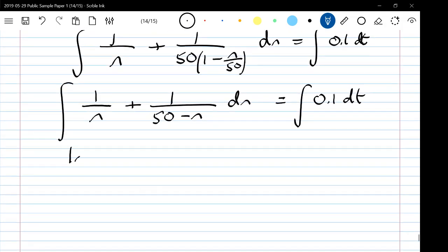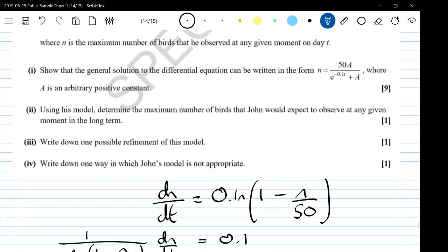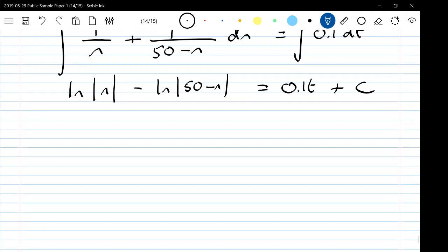Let's integrate that: natural log of n minus the natural log of 50 minus n because we've got the minus as being the coefficient of n in there equals 0.1t plus c. That's not what we're looking for yet, so we're going to have to do some work on that. We need n as the subject.